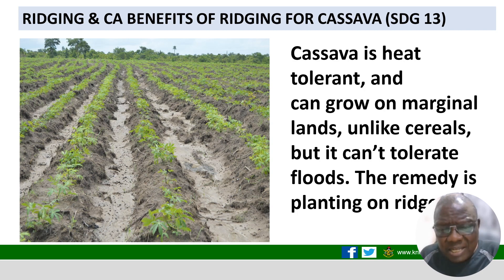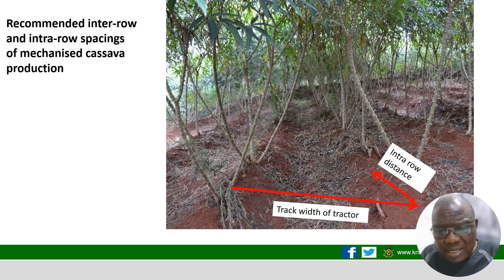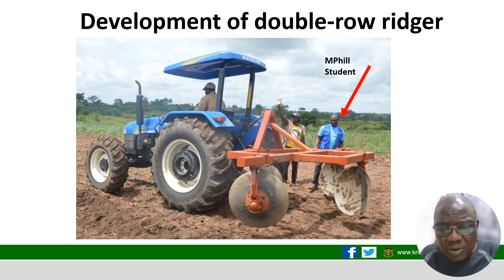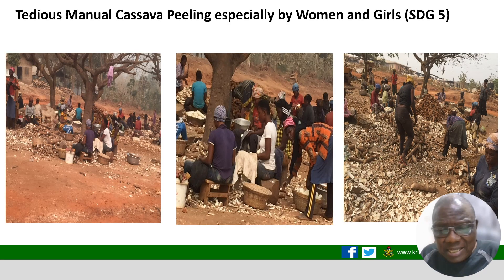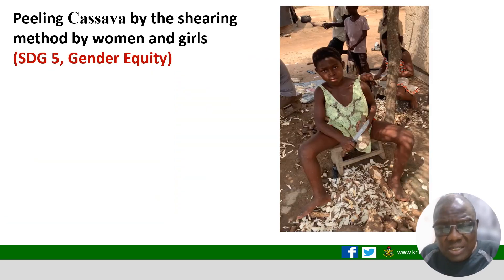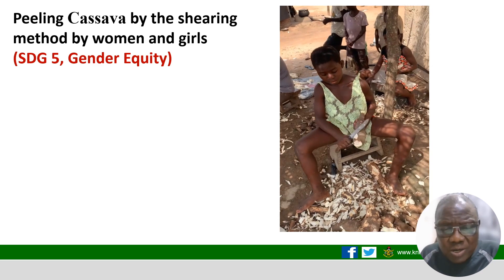To achieve this, cassava must be planted on ridges. Even though cassava is heat-tolerant and can grow on marginal lands, it cannot tolerate flooding. Ridges help roots grow fast and prevent flooding. We have developed a ridger specifically for cassava, because existing ridgers in Ghana are for horticultural crops with a narrow gauge, whereas cassava requires a wider one. Additionally, if we harvest cassava rapidly, we need to peel rapidly — but peeling is still done manually, requiring intervention. We are working on developing a mechanical peeler as well.